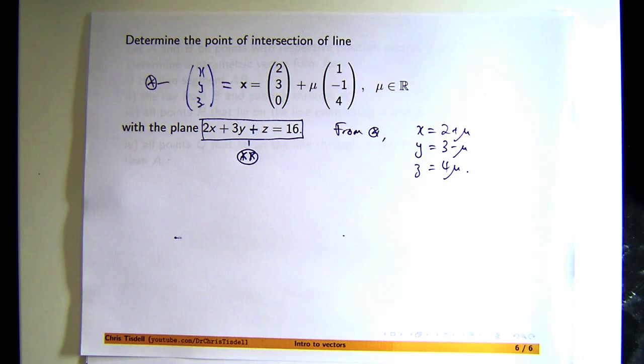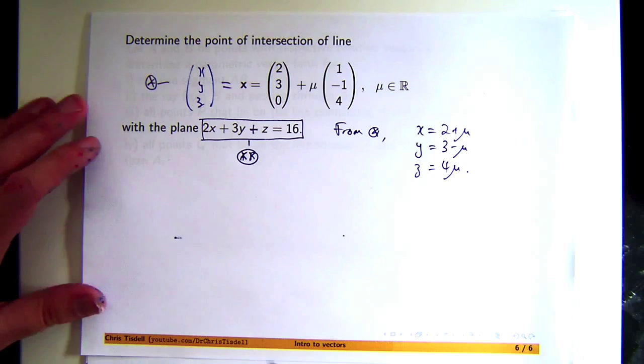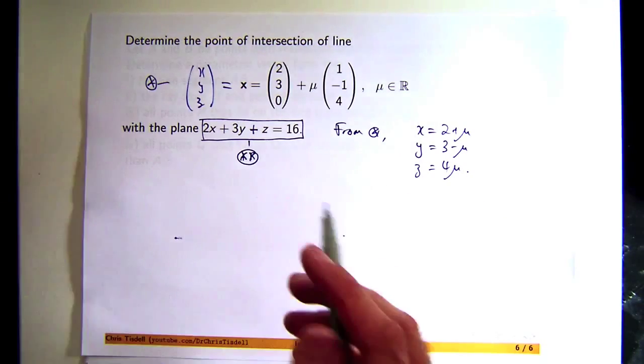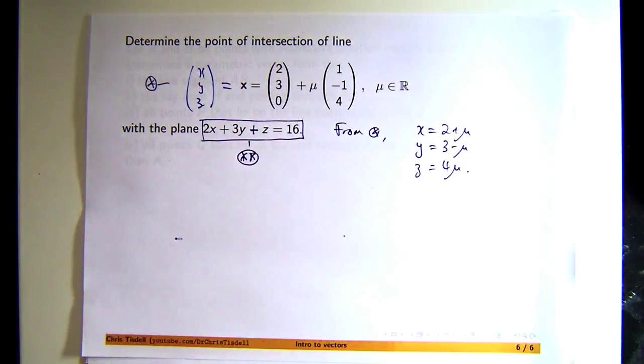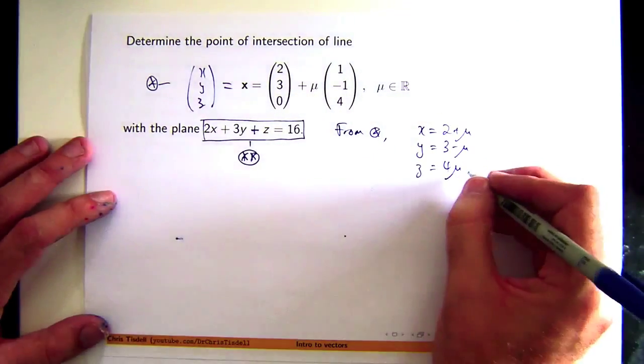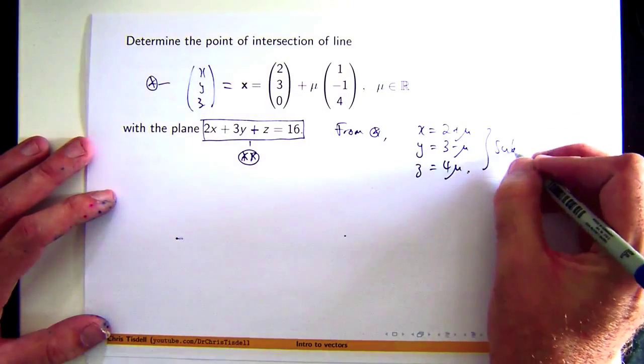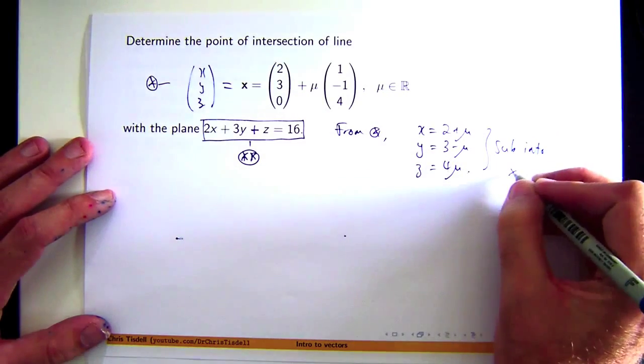Let's sub these x, y, z values back into double star and then we'll find a value for mu, hopefully, and then we'll be able to back substitute to get the point or the position vector associated with that particular value of mu. So let's sub into double star.